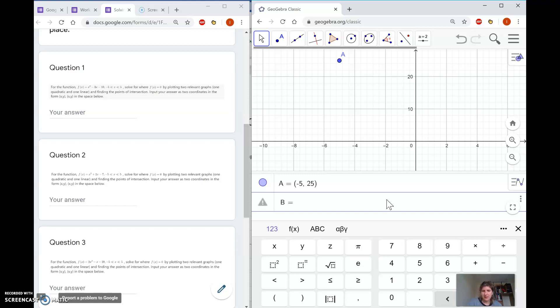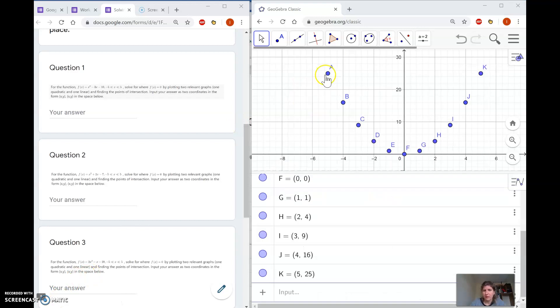For the second point, b = (-4, 16), and you use letters for the points and then put the coordinates in. For c, it's (-3, 9). I'm going to pause and put all of them in. There are quite a lot of points, going all the way up to k.